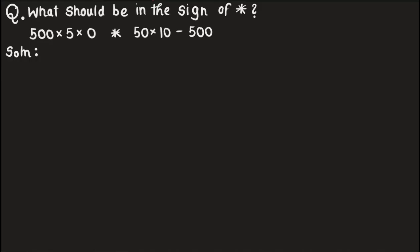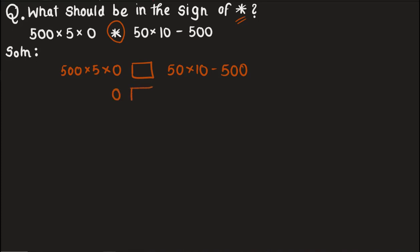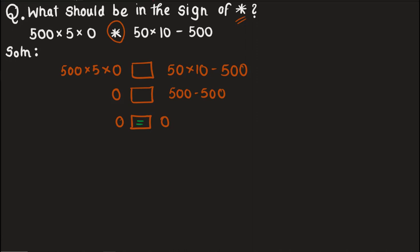Our first question asks: what sign should go in the blank? Let us write it as a box. The left side is five hundred multiplied by five multiplied by zero, and the right side is fifty multiplied by ten minus five hundred. Five hundred times five is two thousand five hundred, but anything multiplied by zero is zero. On the right, fifty times ten is five hundred, and five hundred minus five hundred is zero. So zero equals zero — the answer is the equal-to sign.